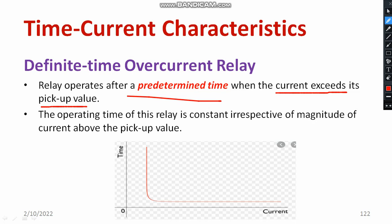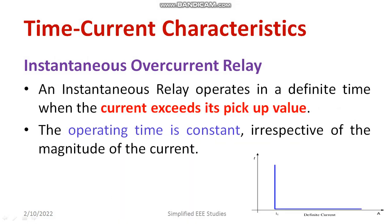We definitely need a modification. One more variety is the instantaneous overcurrent relay. Both are almost similar but there is a slight difference in the characteristics. An instantaneous relay operates in a definite time when the current exceeds its pickup value, but the characteristic is slightly different — it is too steep. The operating time is very constant in case of instantaneous overcurrent relay, maybe 1 second or 2 seconds. That is another type of definite time relay.